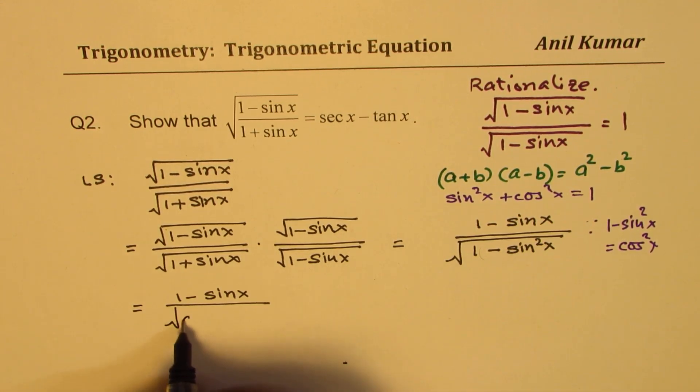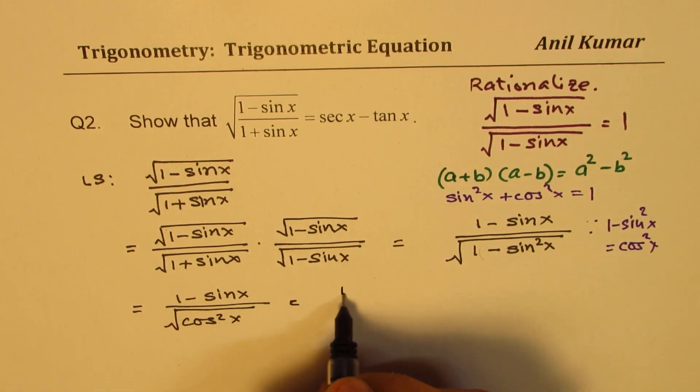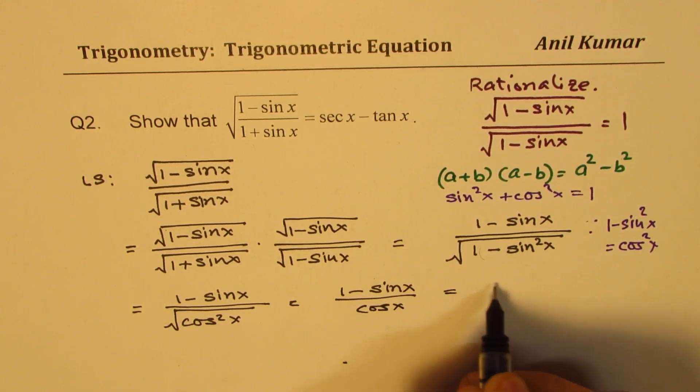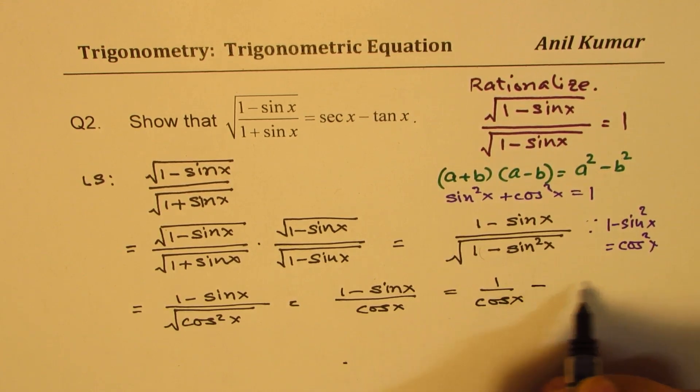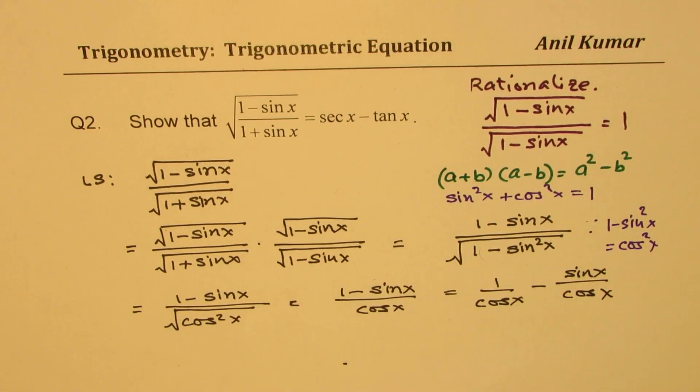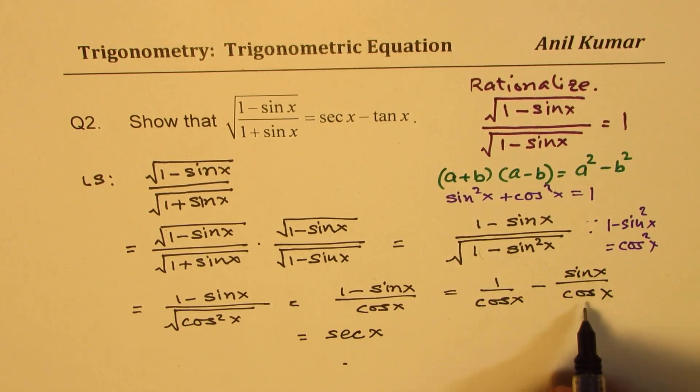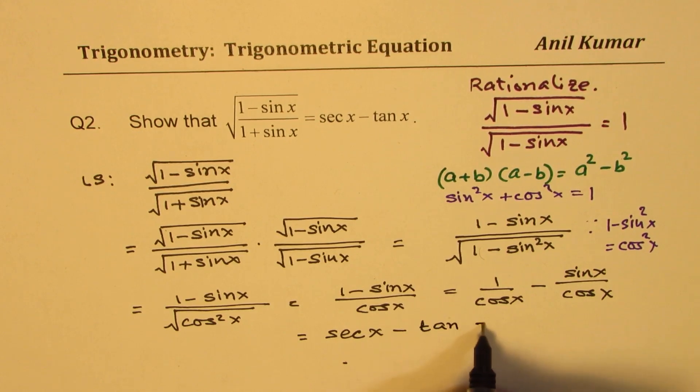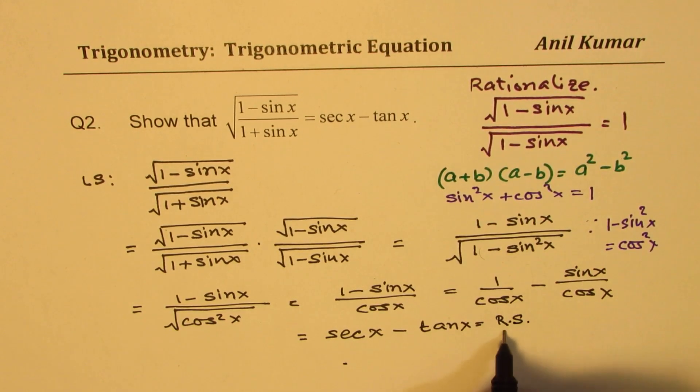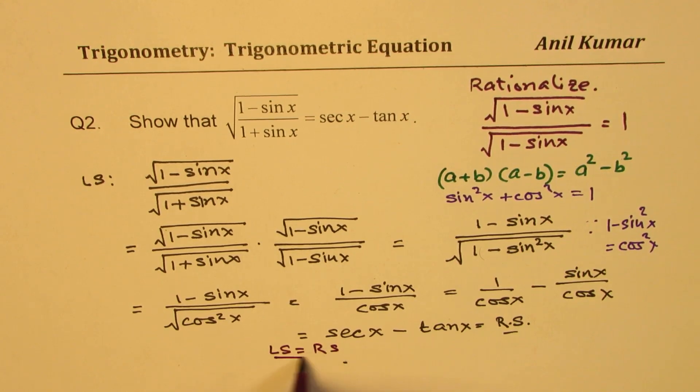So in the denominator, we have √(cos²x). So that means we could write this as (1-sinx)/cosx, or 1/cosx - sinx/cosx. Do you see the result? 1/cosx is secx, and sinx/cosx is tanx. So what we get is the right hand side. So that is how you're going to prove. So we have shown that left side is equal to right side. That is the whole idea. That is how you're going to solve this question.